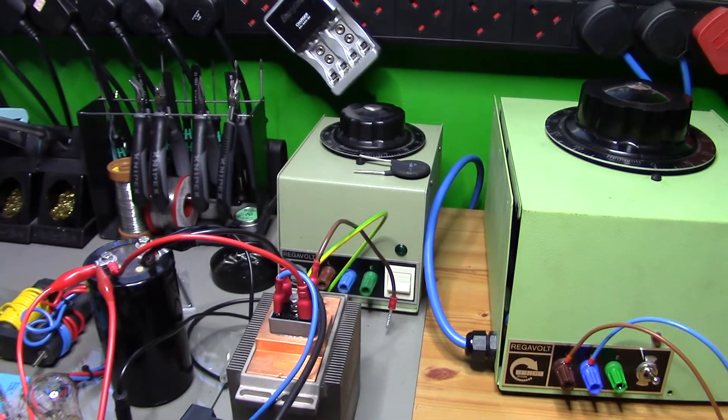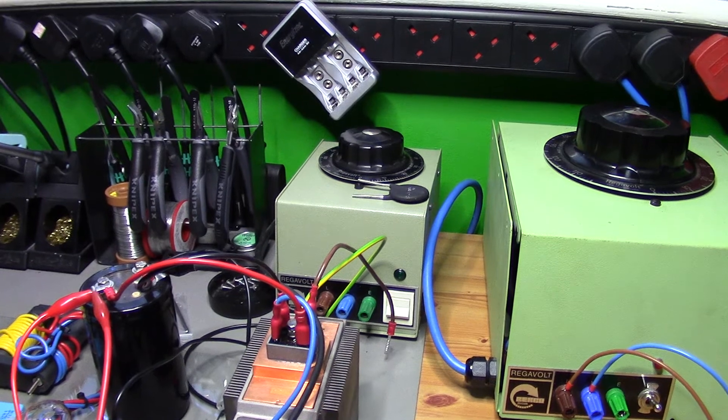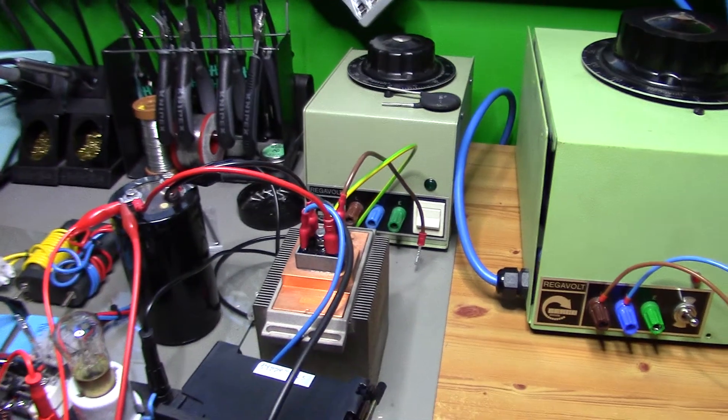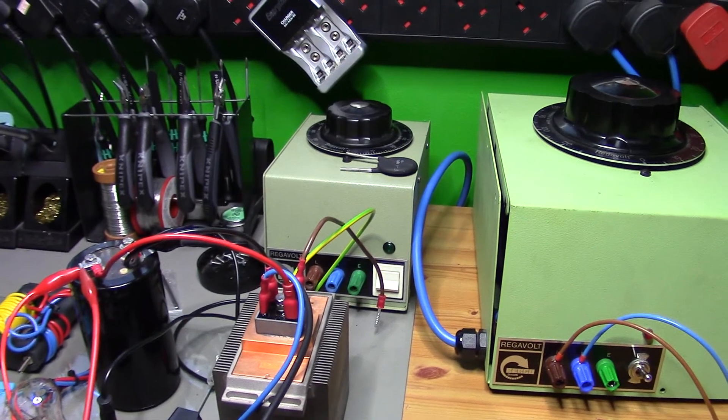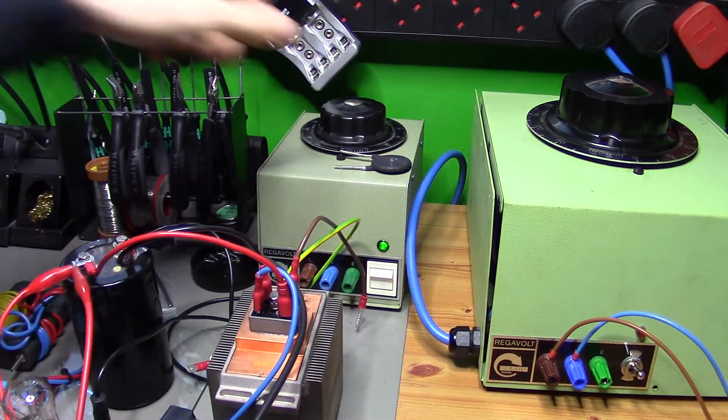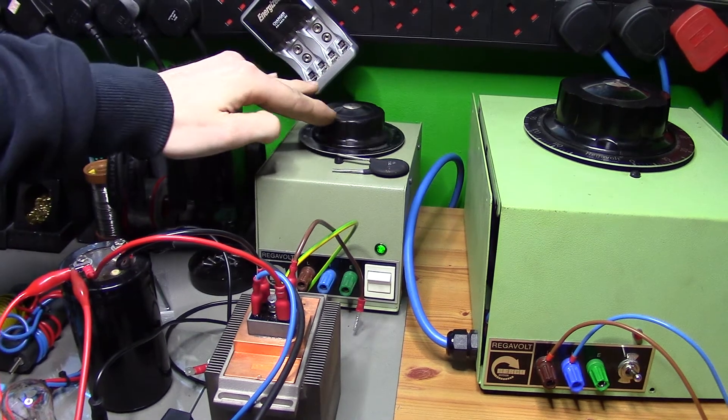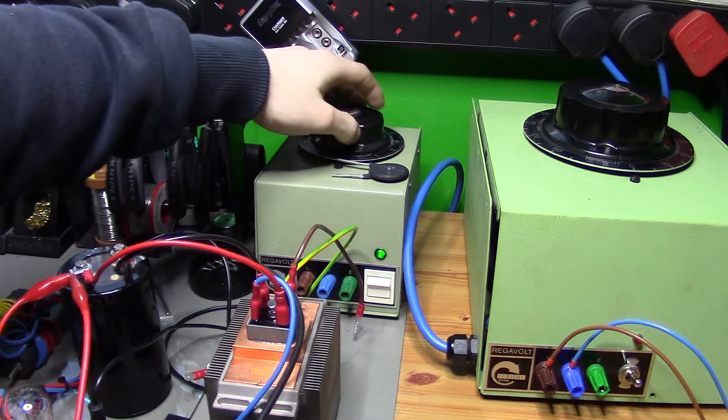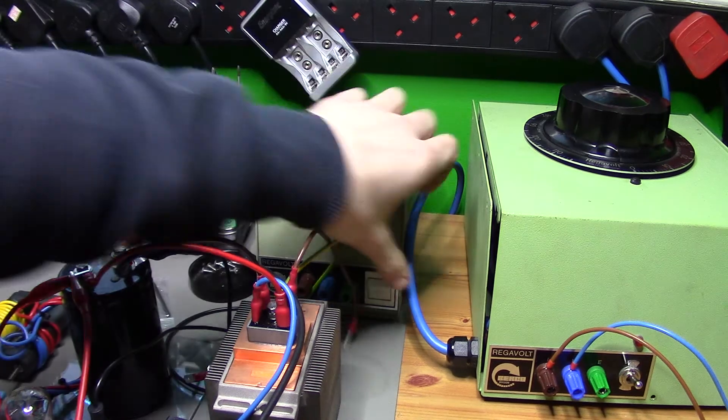There's a little 2.5 amp variac there. And that one doesn't actually have so much of an inrush, so that one's not a problem. See, this one just switches on. There you go, happy as Larry. All the way up. All the way down. No problem.